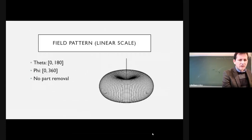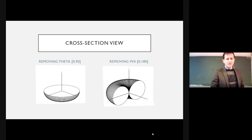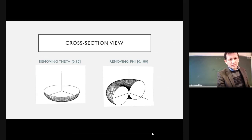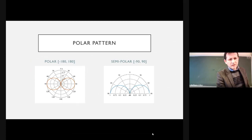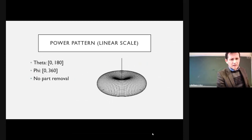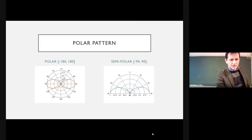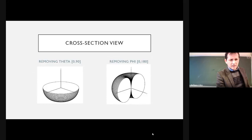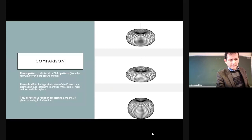Here we have a field pattern shown in a linear scale. This is the cross-sectional view of the same pattern from the previous slide, with some angles removed so you can see cross-sections of the field pattern — the polar pattern. In your assignment, you will change different parameters of the antennas and submit a PowerPoint showing the cross-sectional polar pattern and the power pattern in decibels.